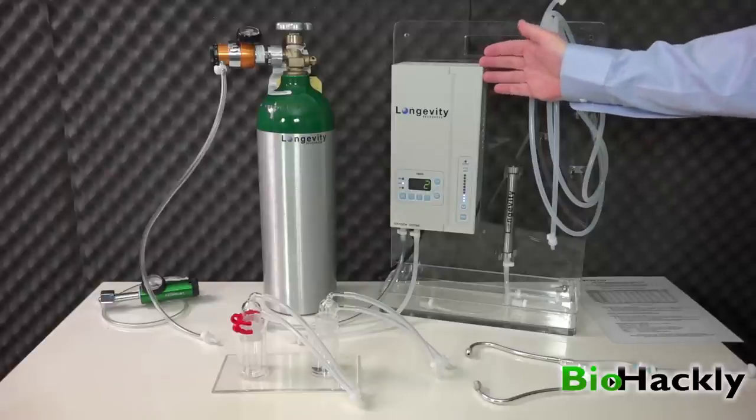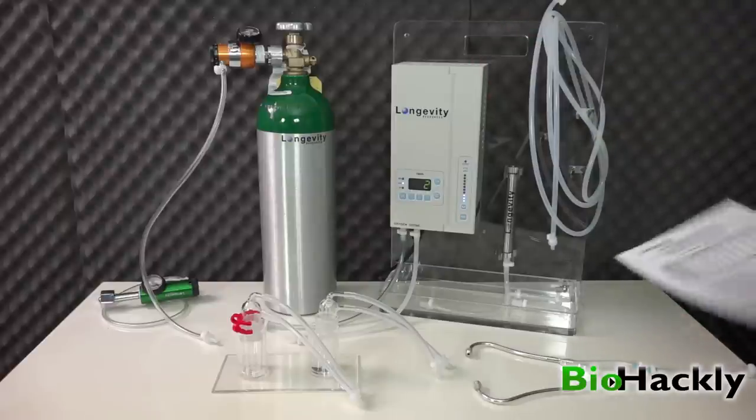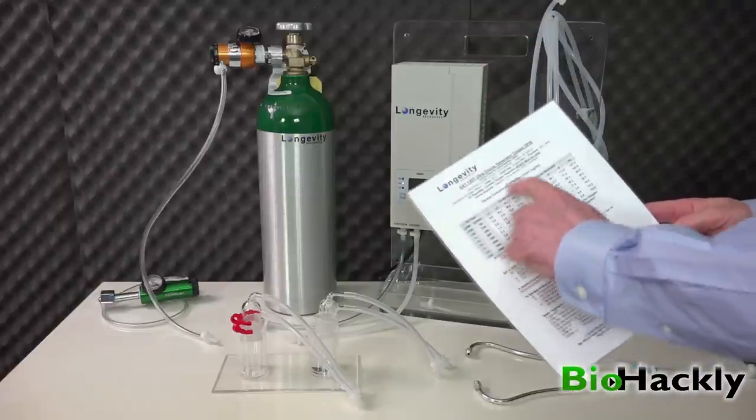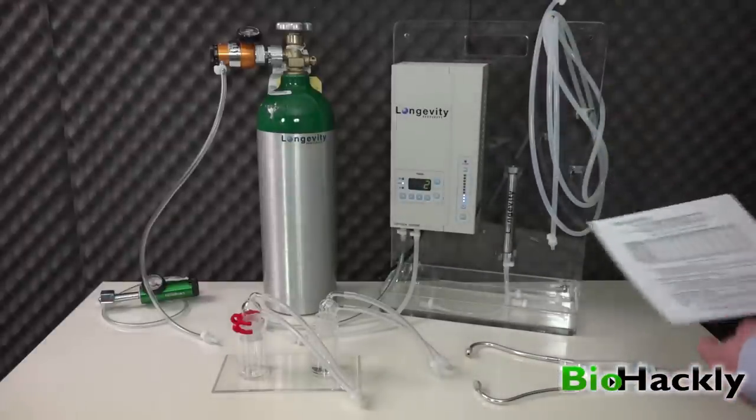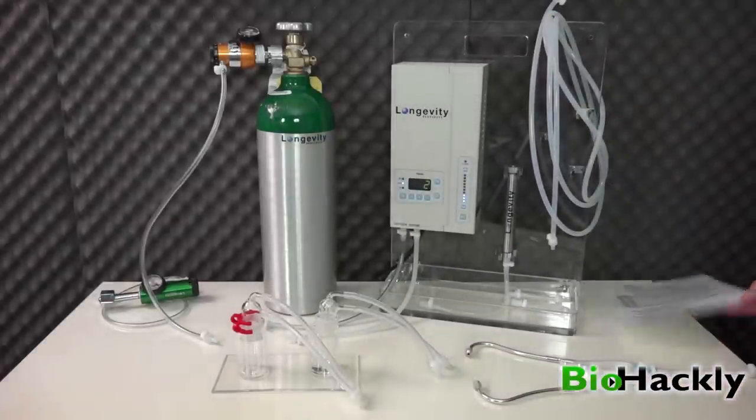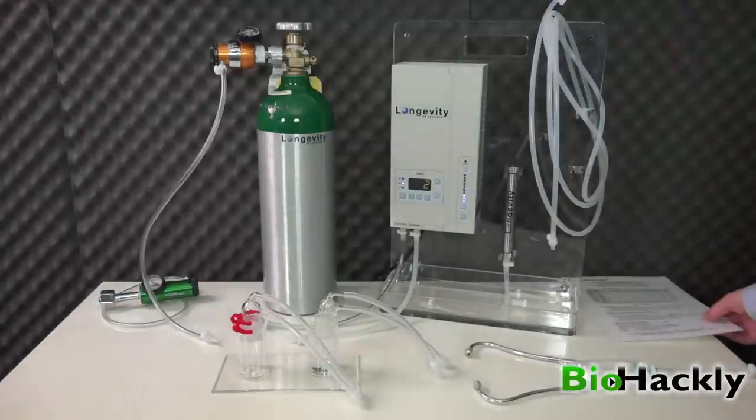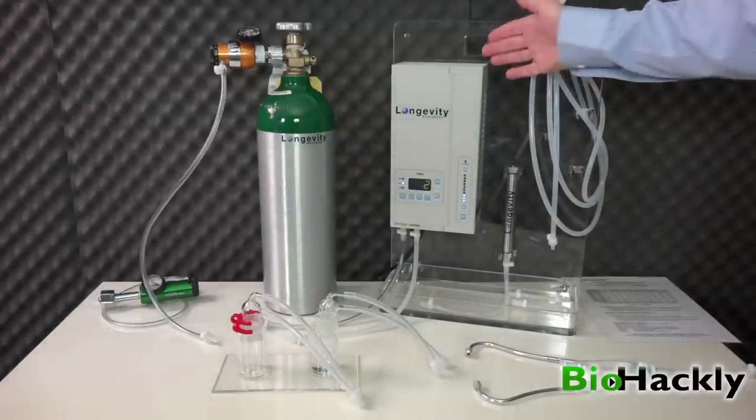Let's get back to our Longevity Resources ozone generator. The chart I was just showing you, where I determined the settings for my gamma, is also available on the top of the machine. You don't have to worry about losing this—you'll always have those settings.